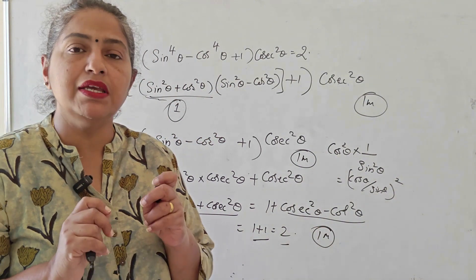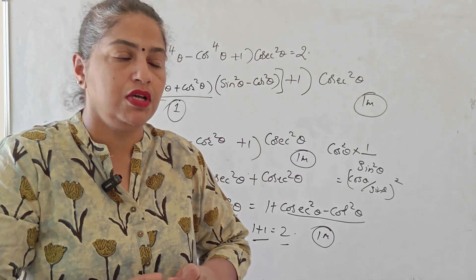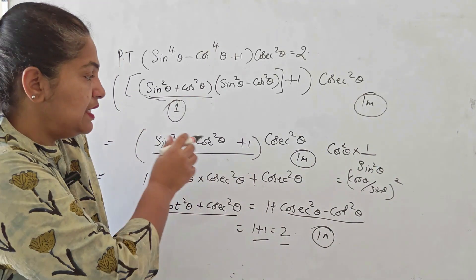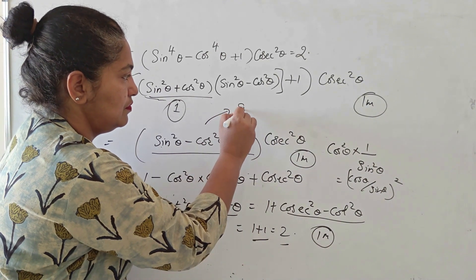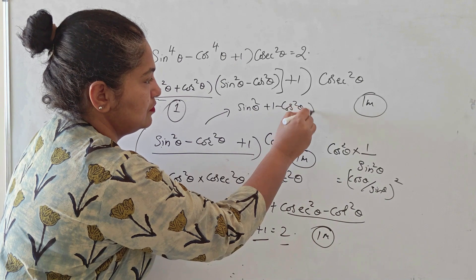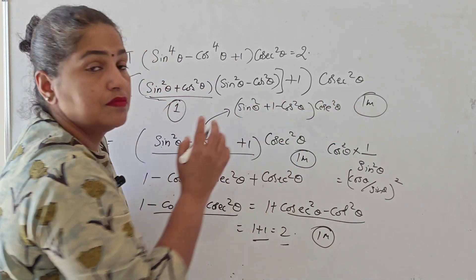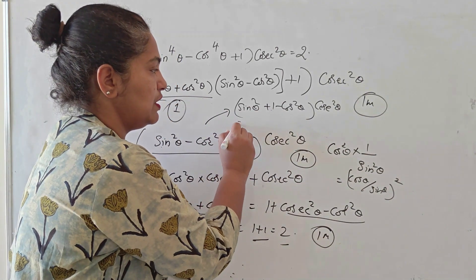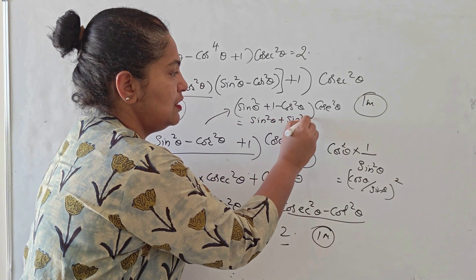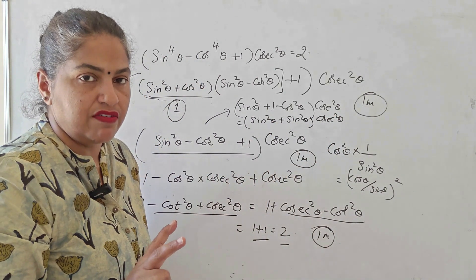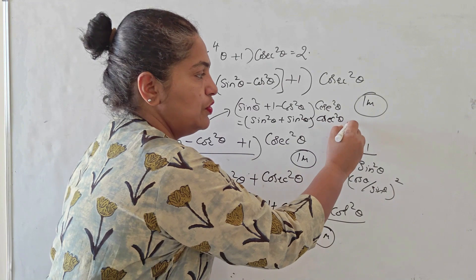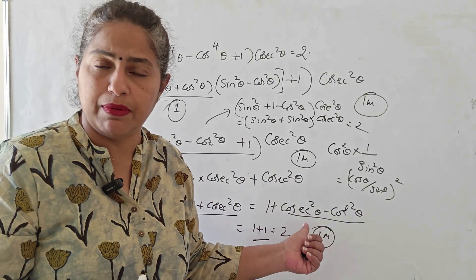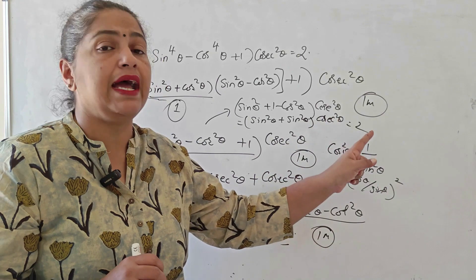An alternate approach: when you reach sin²θ − cos²θ + 1, instead of opening the bracket you can write 1 − cos²θ = sin²θ. So you get sin²θ + sin²θ, which is 2 sin²θ, multiplied by cosec²θ gives 2. That is a different way to simplify from that particular step — you can choose either approach to get 2 as the answer.